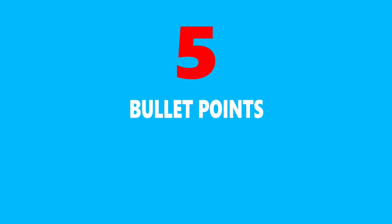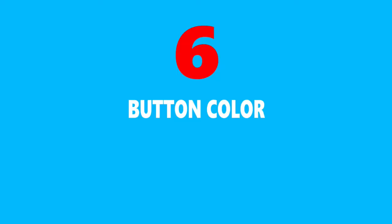Number five in this optimization checklist is bullet points. Use bullet points to display the benefits of the freebie you're giving away — don't get this confused with features. People buy through emotion, so by showing them how they will benefit will always drive conversions up.